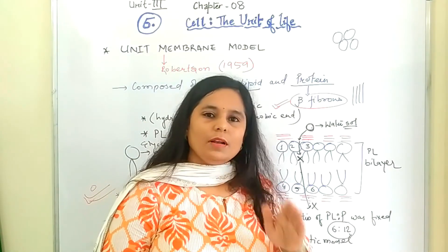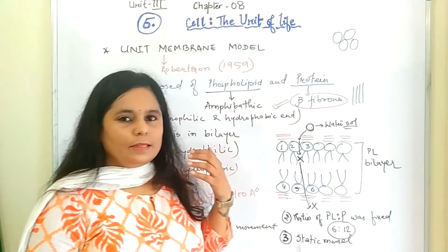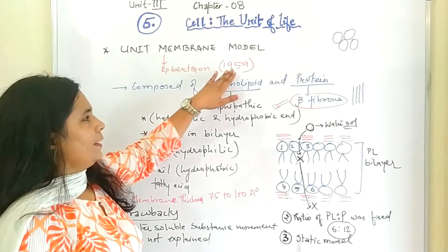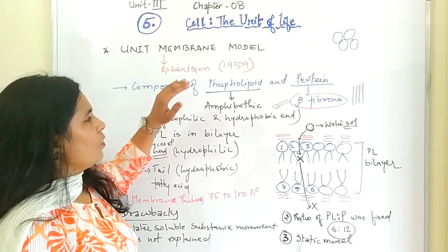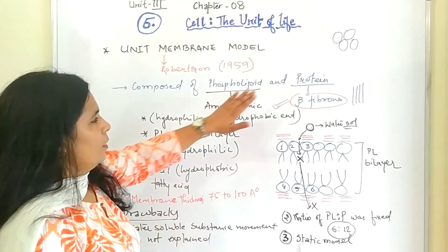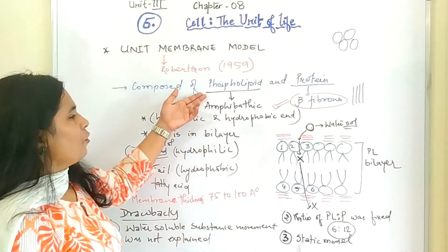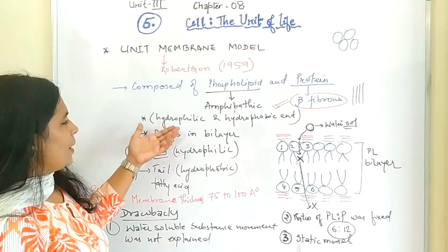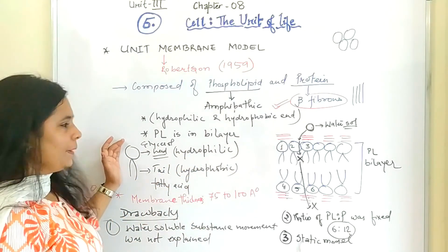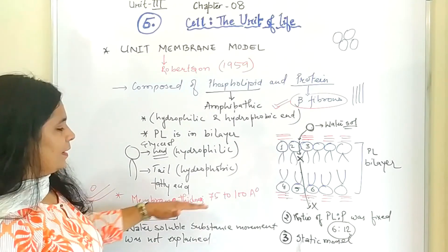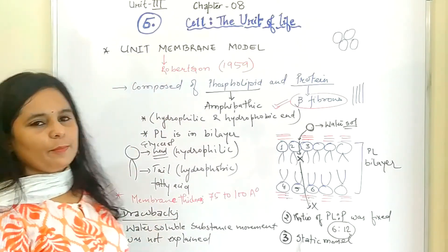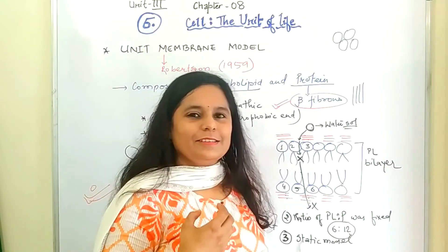Because of this, this model has also not succeeded in the main models. So the unit membrane model was given by Robertson in 1959. The model was, according to the model, it is composed of phospholipid and protein. Protein was different, that is beta-fibrous. And phospholipid was amphipathic. That is amphipathic, hydrophilic, hydrophobic, both the parts are there in the same molecule of phospholipid. And the important was, the membrane thickness was given, which was the additional information and the very important information given by Robertson. So this was about the unit membrane.